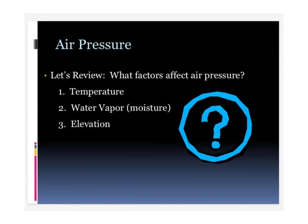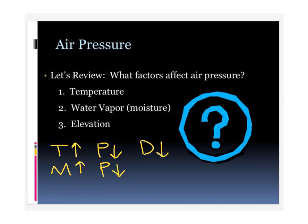We have three different factors: temperature, moisture, and elevation. If temperature increases, pressure decreases — it's an inverse relationship. And remember, pressure and density do the same thing, so density decreases as well. For water vapor or moisture, if moisture increases, pressure decreases — that same inverse relationship. Density and pressure being best friends do the same thing. With elevation, the higher up you go, the lower the pressure and the lower the density. So those three factors affect air pressure. If you increase any one of them — temperature, moisture, or elevation — pressure and density are going to decrease.